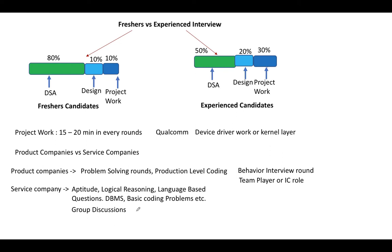In a service company there are typically one to two technical rounds followed by HR rounds, while in product companies you have four to five technical rounds, mostly based on coding and DSA. As for the package range you can expect from product versus service companies, that part you already know.